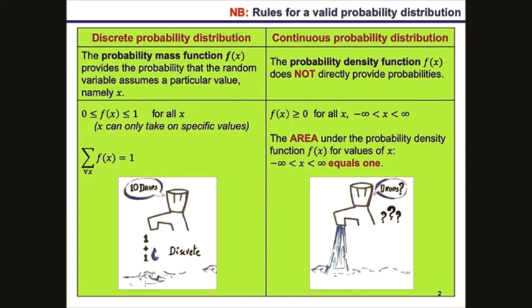Let's take a look at the difference between discrete probability distributions and continuous probability distributions. In the case of the discrete probability distribution, the probability mass function f of x provides the probability that the random variable assumes a particular value of x. f of x lies between 0 and 1 for all x values that have been observed, and x can only take on specific values.